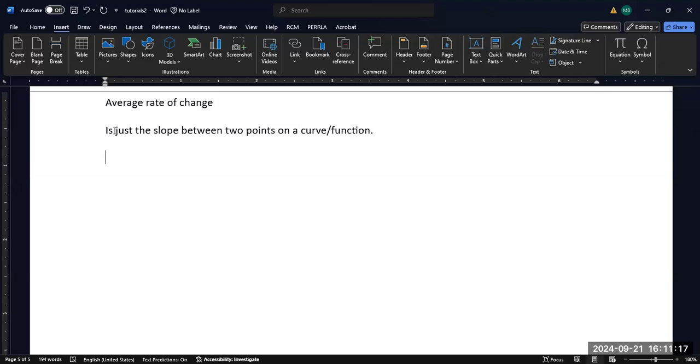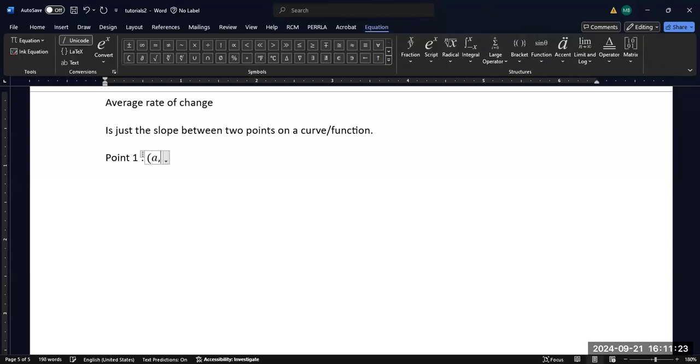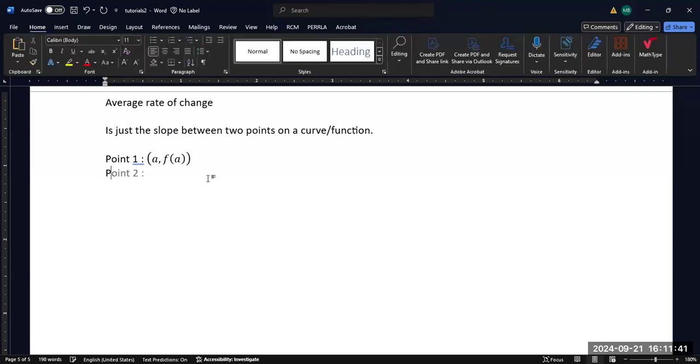So keeping that in mind, point one is going to just be (a, f(a)). So whatever x value we choose to be a, then the average rate of change is calculated from the x coordinate a and the y coordinate, wherever we evaluate that function at a.